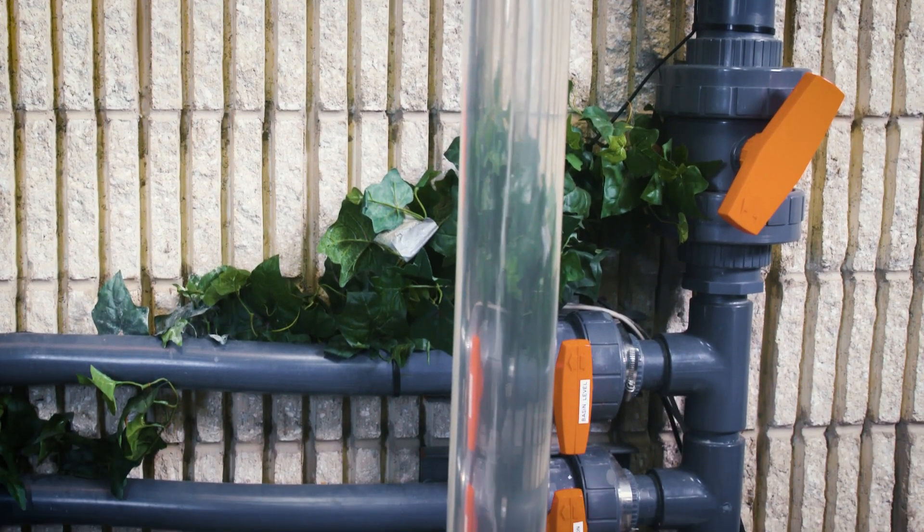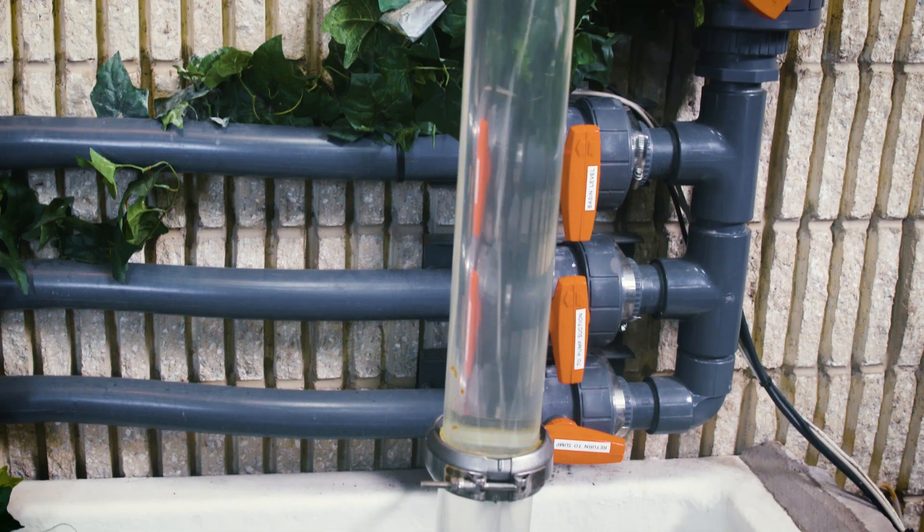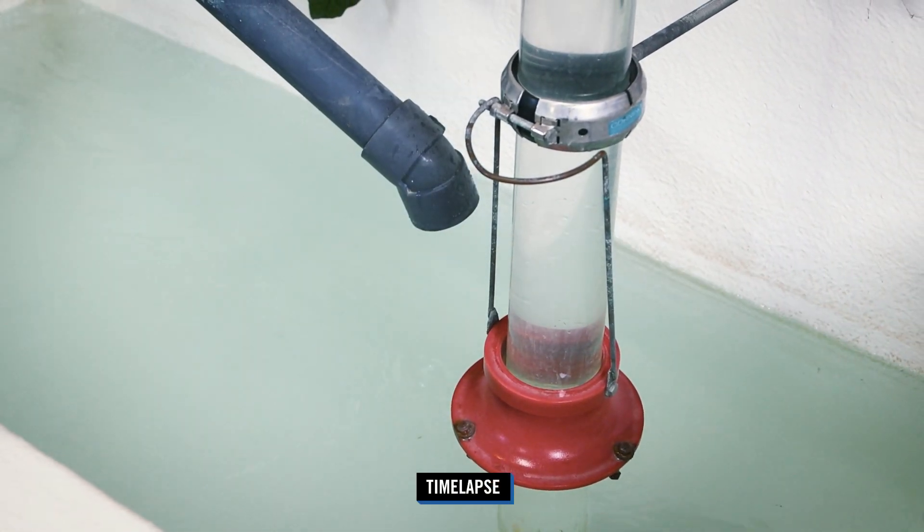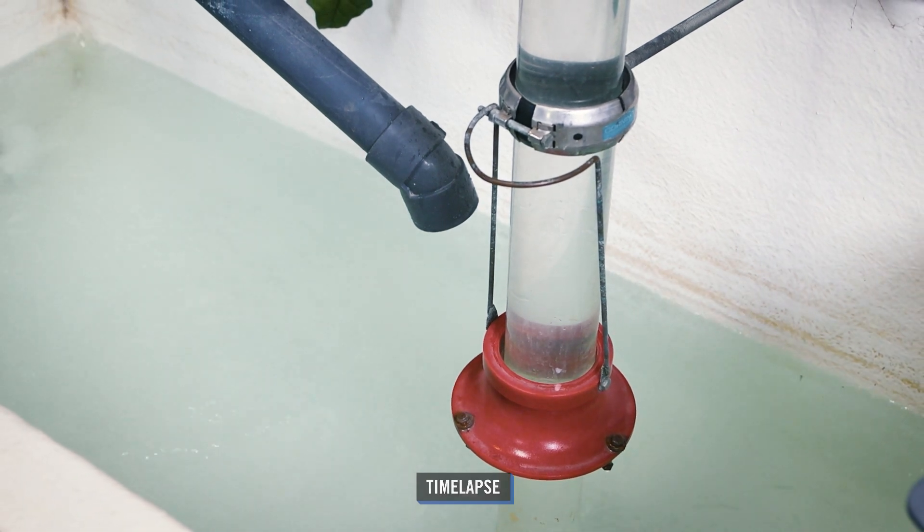Vortexing occurs when there is not sufficient minimum submergence of the suction pipe. To simulate this, we will lower the sump level by pumping water into a secondary storage tank.